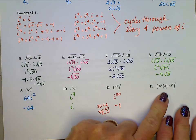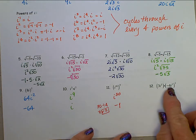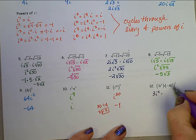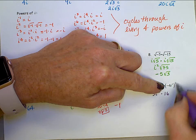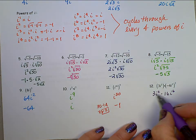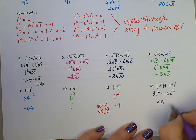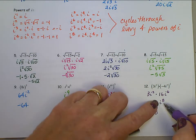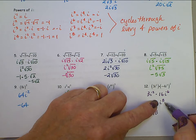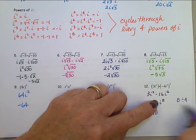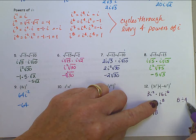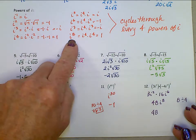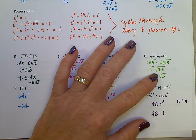For 3i squared times (negative 4i cubed) squared: we do the outside exponent first and square the second piece. Negative 4 squared is 16, and i to the 6th — so we have 3i squared times 16i to the 6th. Multiplying: 3 times 16 is 48, and i squared times i to the 6th is i to the 8th. For i to the 8th: 8 divided by 4 is 2 with no remainder, meaning it went through the pattern exactly an even number of times — so this equals 1. And 48 times 1 is 48.